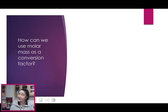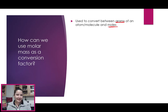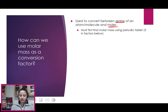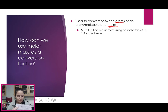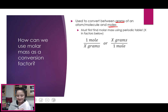Let's look at using molar mass as a conversion factor. We use that to convert between grams and moles. Any time you're converting between grams and moles, or you see grams show up in a problem, you're going to need the molar mass — and you find the molar mass using the periodic table. As a conversion factor, it'll be either 1 mole over x number of grams, where that x is the mass from the periodic table, or x number of grams over 1 mole.